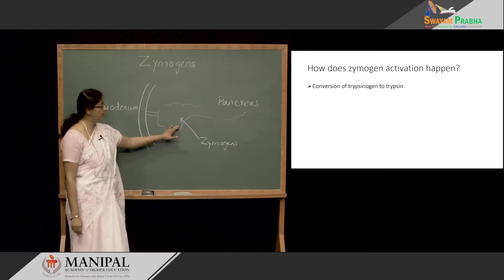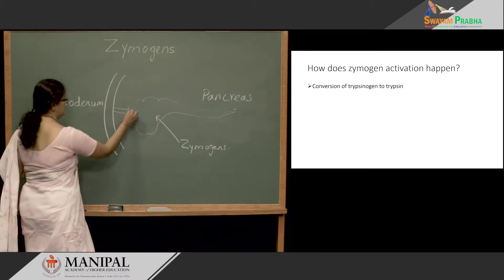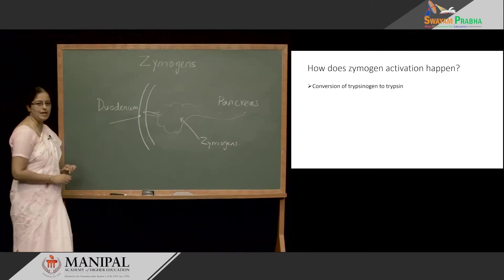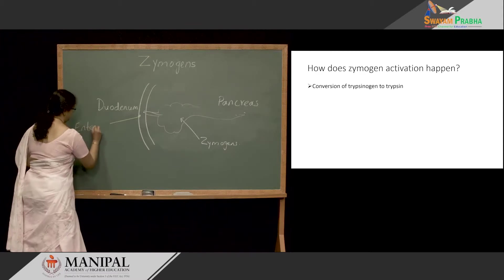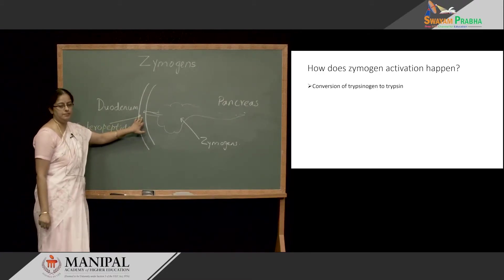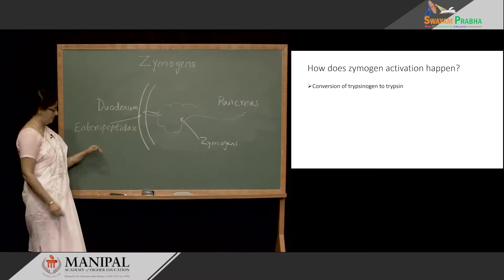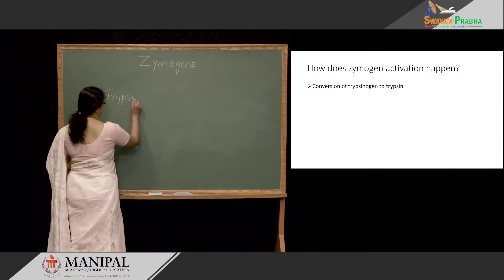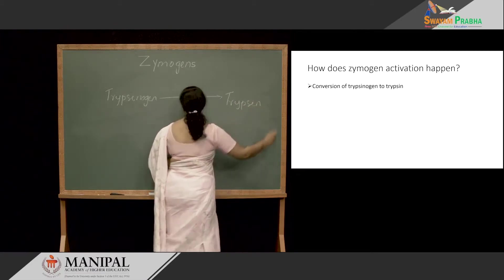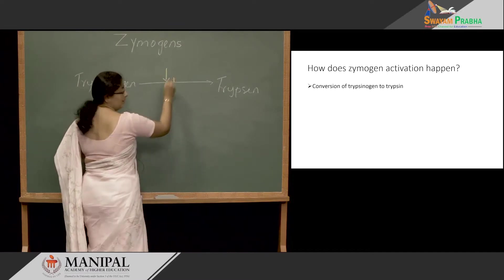They are synthesized and stored in the pancreas as Zymogen forms. Once the chyme enters the duodenum, these Zymogens are released into the duodenum. On the surface of the mucosal cells, there is an enzyme called enteropeptidase. Once the Zymogens reach the lumen of the duodenum, enteropeptidase activates all these Zymogens directly or indirectly.